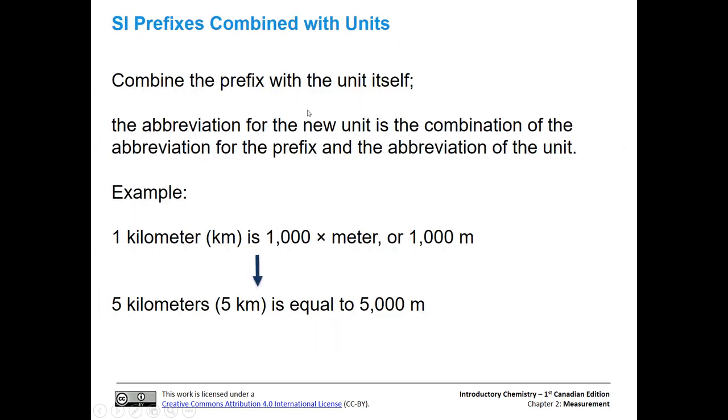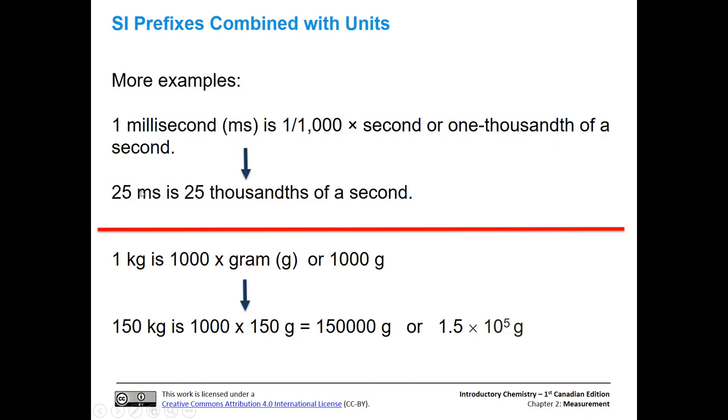What we're going to do is combine that SI prefix with the unit itself, and that's going to make a new unit essentially. Let's look at an example. One kilometer is 1,000 times a meter, and that's going to be 1,000 meters. So if we have five kilometers, then we're going to take five times 1,000, because that's the definition of a kilo. Five times 1,000, and we're going to get 5,000 meters.